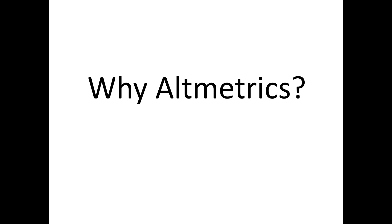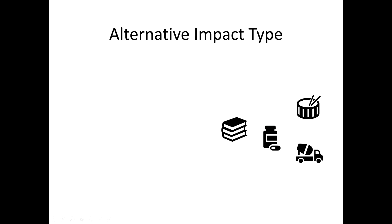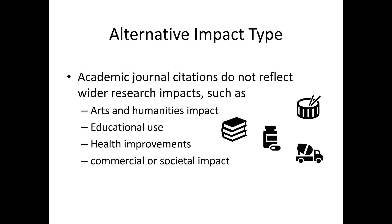First of all, why altmetrics? Why might you be interested in using altmetrics? The main reason is that they have the potential to represent an alternative impact type. The underlying belief is that academic journal citations do not reflect wider research impacts such as arts and humanities impact, educational uses, health improvements, or commercial or societal impact.